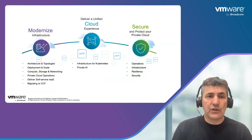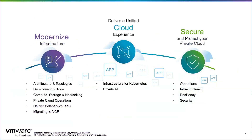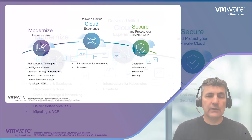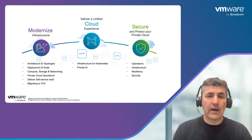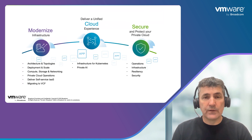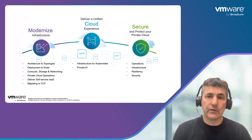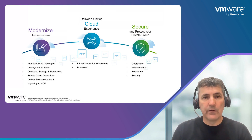Those are the three key business initiatives we'll be going over. We'll be talking about how to modernize infrastructure and enable customers, focusing a lot on that modernization initiative. We'll go over architecture, talk about how we deploy and scale, and then get into the building blocks of the private cloud: compute virtualization, storage virtualization with vSAN, and network virtualization with NSX. Then we'll get into private cloud operations and centralized operations through VCF Operations, tying in with VCF automation and showing some of our IaaS capabilities. We'll also discuss tools to help customers migrate legacy workloads onto this new modern private cloud.